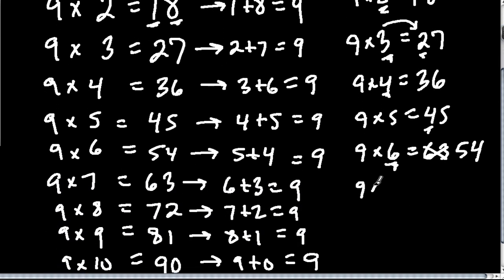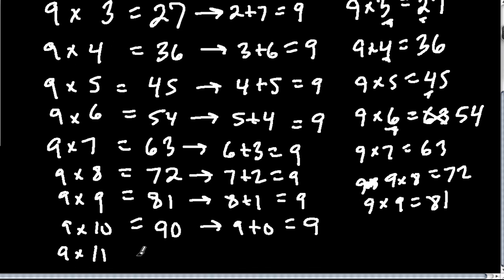Well, 9 times 7 has to be 63. 9 times, I think you get the pattern, 9 times 8 is 72, 9 times 9 is 81, and then so forth. Now, back to 9 times 11.